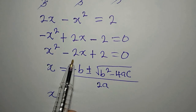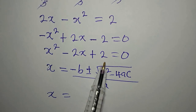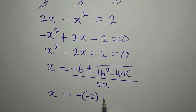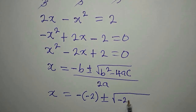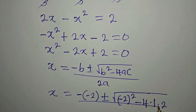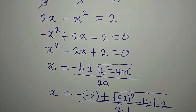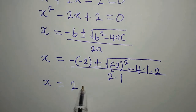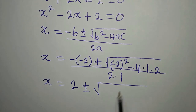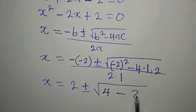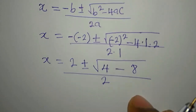Our b is negative 2 and c is 2 as well. So in place of b I write negative negative 2, plus or minus the square root of negative 2 squared minus 4 times 1 times 2, all over 2 times 1. x equals 2, because negative negative gives positive, plus or minus the square root of 4 minus 8, all over 2.